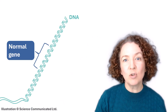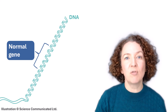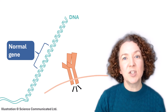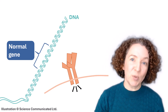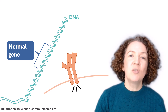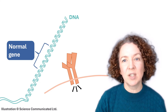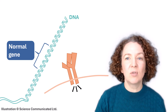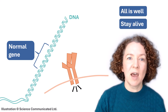Imagine that the normal version of a gene controls the production of a protein — one that sticks out from the surface of the cell and helps it communicate with its neighbours. Normally this receptor protein gives a message to the cell, sending a signal that all is well and to stay alive.